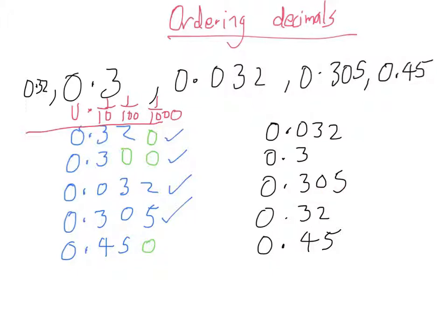But I think this is a very good easy method to make sure you get it right. Make sure that each number has got the same number of numbers after a decimal point by just adding zeros on. Then we can imagine this is 320,